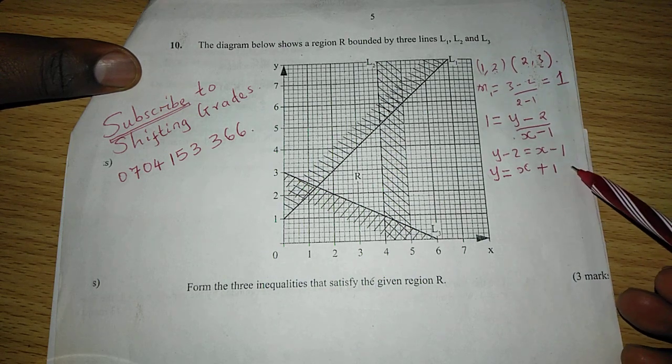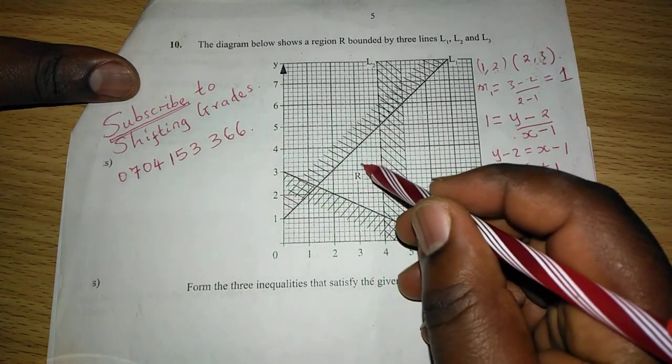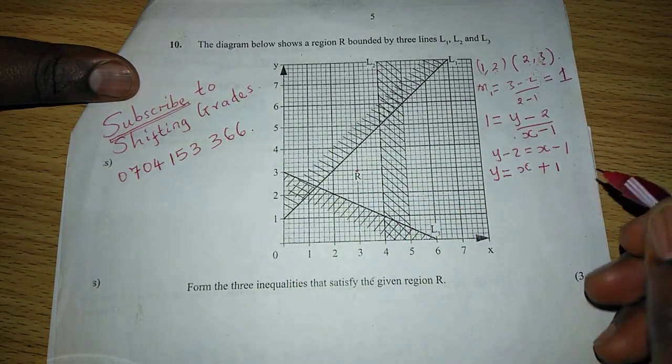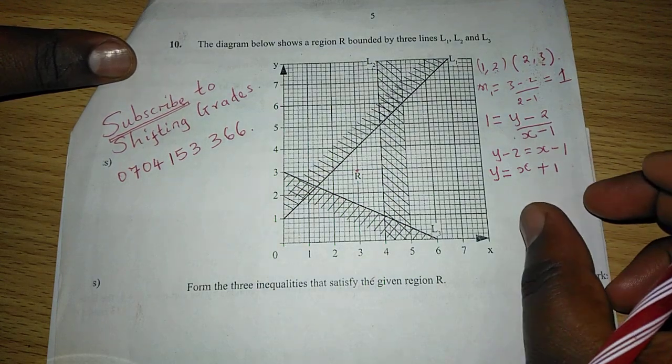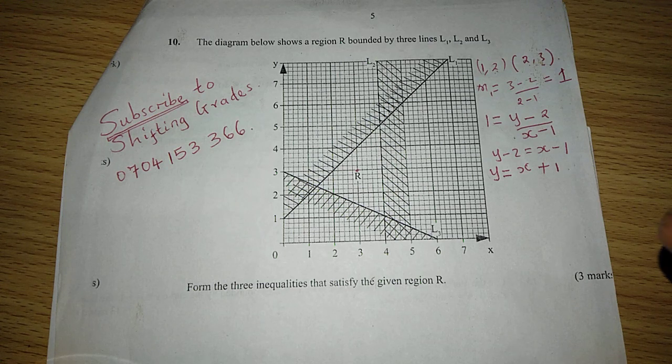So with the linear equation, we can consider a coordinate, for example, coordinate 3, 3, which is in the required region, and we substitute that coordinate in the equation so that we may know the inequality which will satisfy this line.